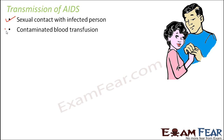Contaminated blood transfusion is another route. During accidents or surgical situations, blood is sometimes transferred from one person to another. If blood transfusion takes place from an infected person to a normal person, the normal person also gets AIDS because the blood contains the HIV virus.